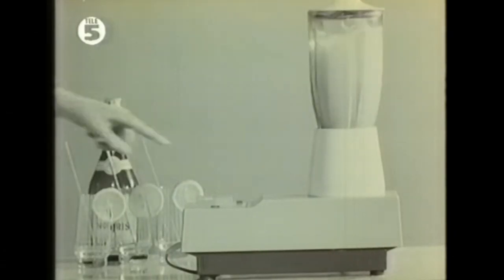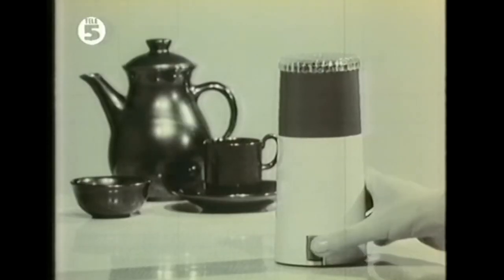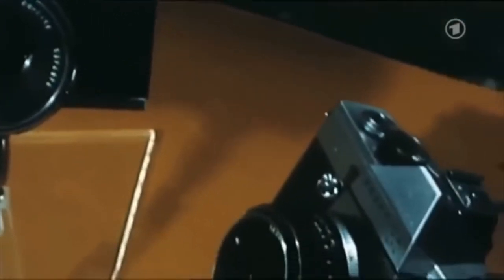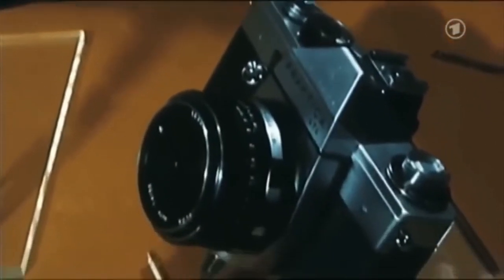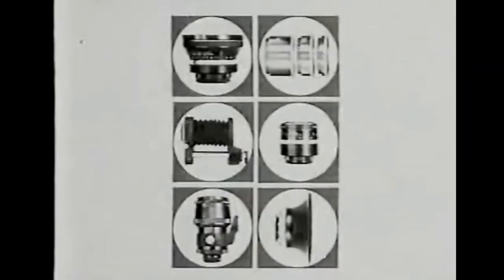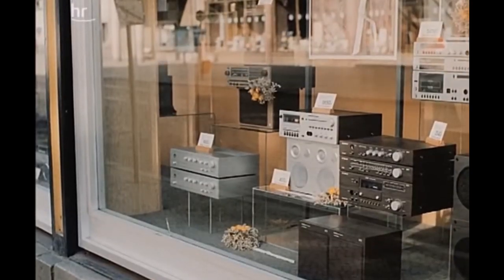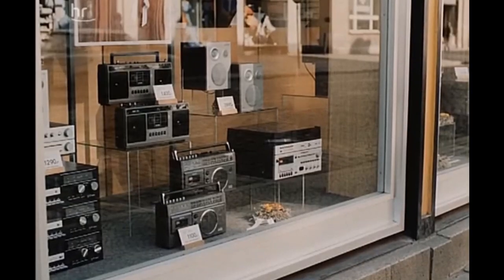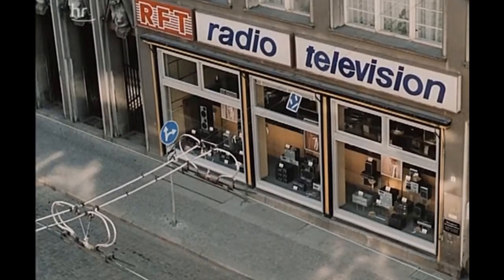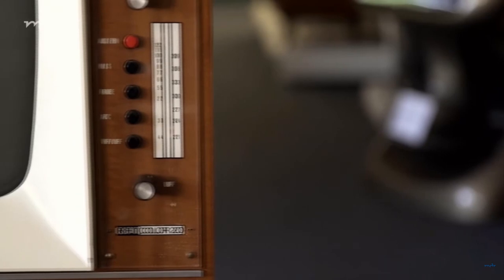Functionality and the reduction to the essentials were typical of GDR design. Many brands still enjoy a great reputation, like the Praktika cameras with their MTL-5B model, considered today in 2020 a fantastic entry-level SLR camera. Or some of the radios or TVs manufactured by RFT, the national telecommunications company, who made the first color TV produced in the GDR, the RFT Color 20.